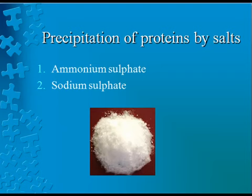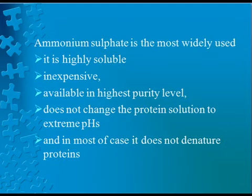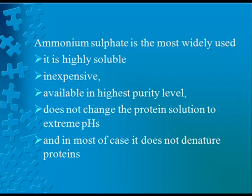Ammonium sulphate and sodium sulphate are the salts used for the precipitation of protein. Ammonium sulphate is the most widely used because it is highly soluble, inexpensive, and available at the highest purity level. It does not change the protein solution to extreme pH, and in most cases it does not denature proteins.